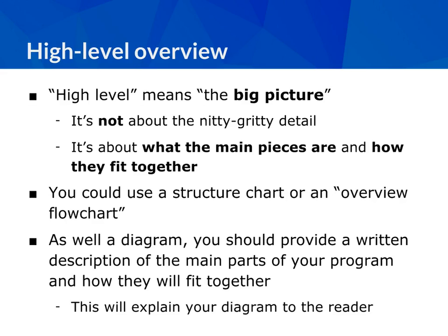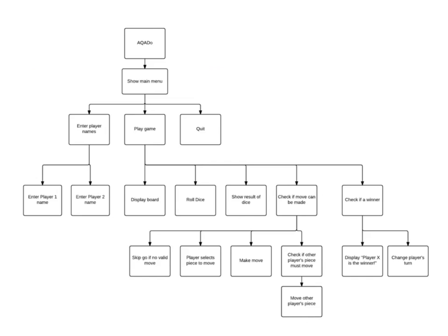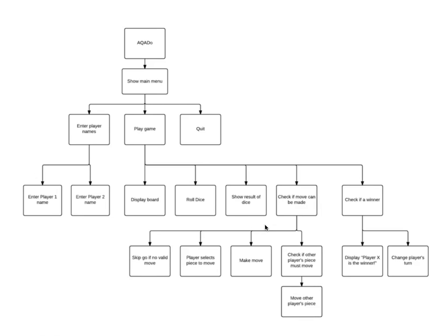The second part of Design of Solution is the high-level overview — this is the big picture, the bird's eye view of what the main pieces are and how they fit together. You could use a structure chart or an overview flowchart. A structure chart might show the main program broken into its top-level processes, with each process branching into sub-processes — for example, a 'play game' process might contain displaying the board, rolling the dice, showing the result, and checking if a move can be made.